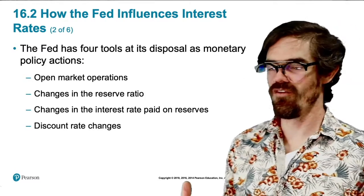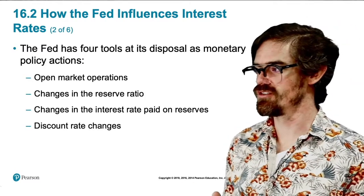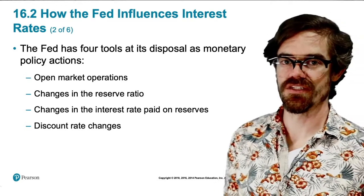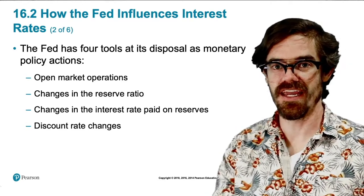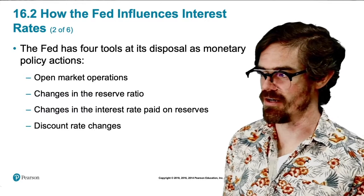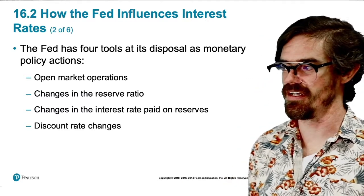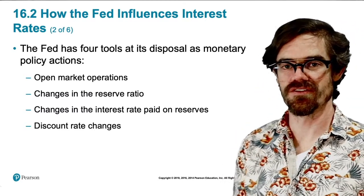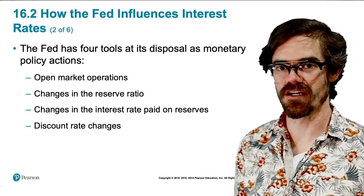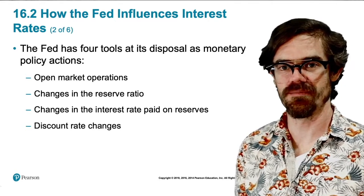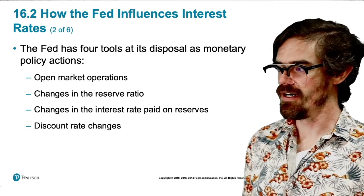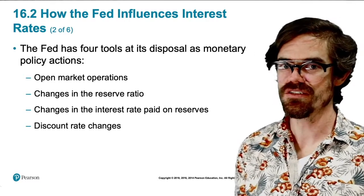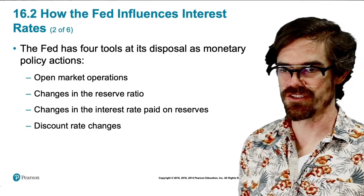There are four major tools at its disposal that it can use in engaging in monetary policy. The first is what are called open market operations. This is what we're talking about with the Federal Open Market Committee, where it determines whether to buy or sell bonds — government securities.